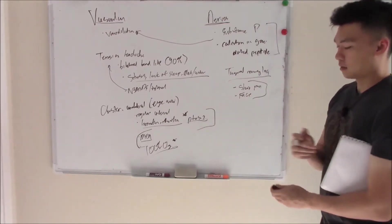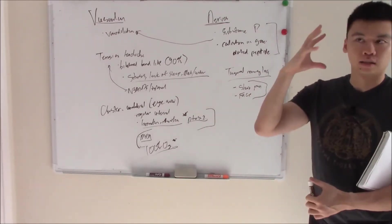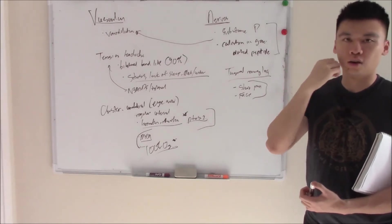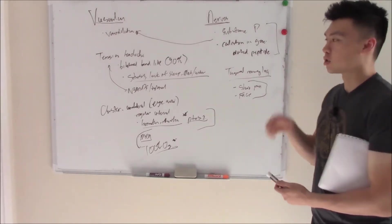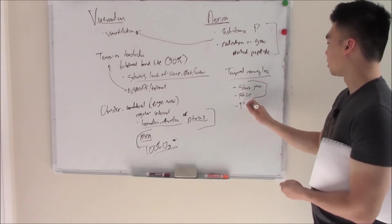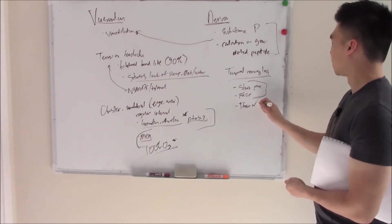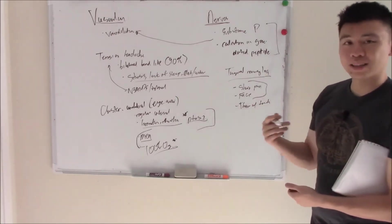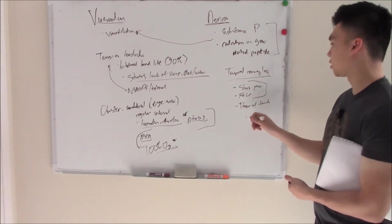And this nerve that's going awry can be triggered by anything: a little touch, a little wind, if you're shaving, it can trigger this nerve to cause that pain. So just write trigger with touch. You can trigger with movement like eating, chewing, talking.